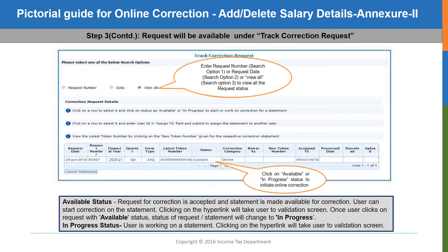In the track correction request menu, you can see the status of the correction request as displayed on the screen. You can see three options: the request number, the date, and the view all option. If you are searching using the request number, that specific request will be displayed. You may search using the date of request also, which will display the status of all requests submitted on a particular date or date range. Alternatively, you can use the view all option, which will display the details of all correction requests made by you.